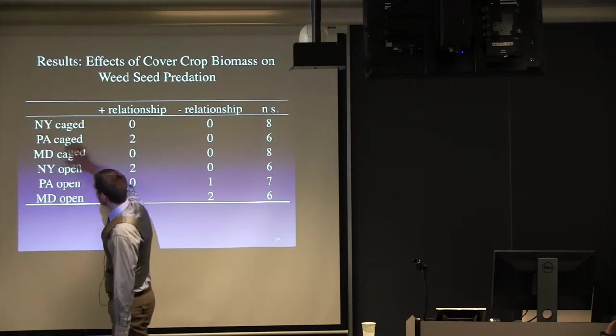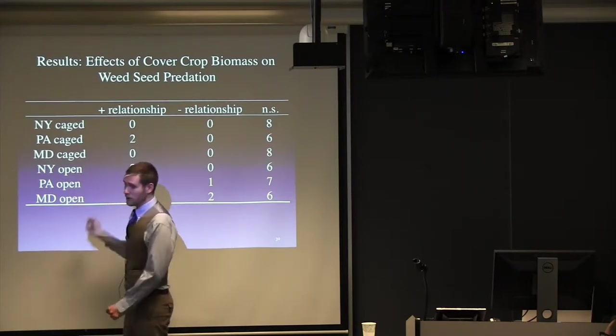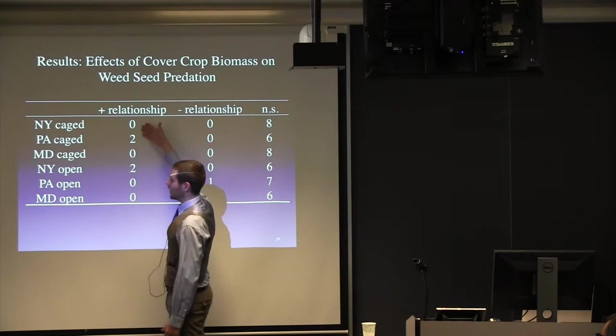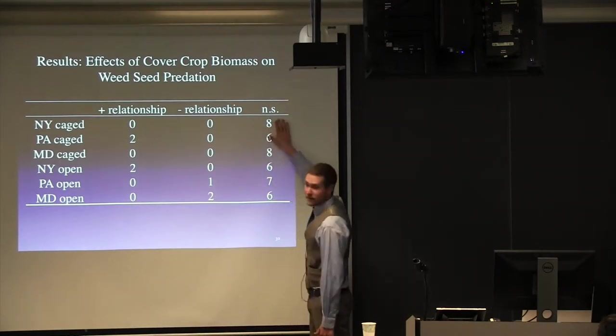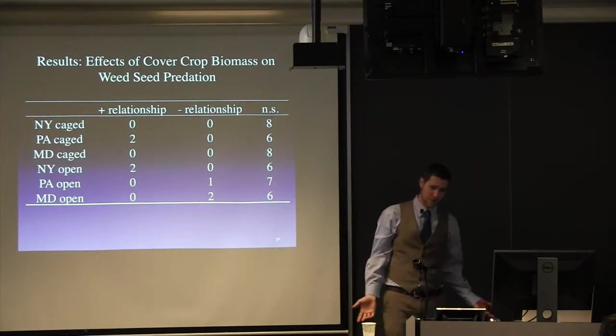So each of these, so these are states, caged arenas open. I ran eight models for each of those. So the total, the hope was that we would find eight positive relationships in each of those. Turns out the vast majority were not significant. This was kind of a bummer.